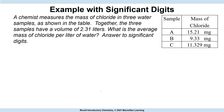Let's look at a mixed calculation example from the book. We're going to measure the mass of chloride in three water samples. Samples have a volume of 2.31 liters. What is the average mass of chloride per liter? We're going to add up the total mass and divide by the volume.